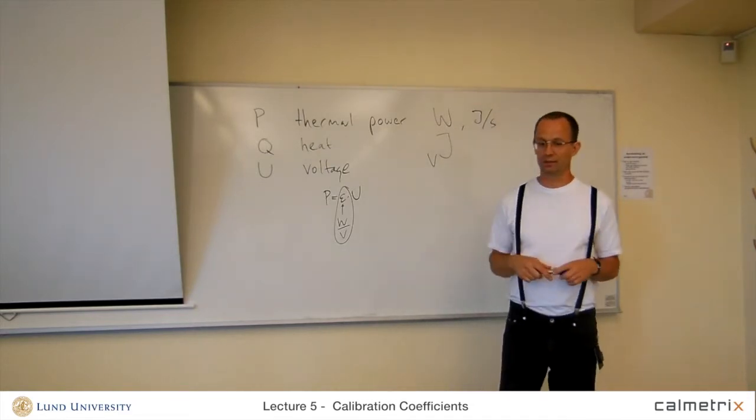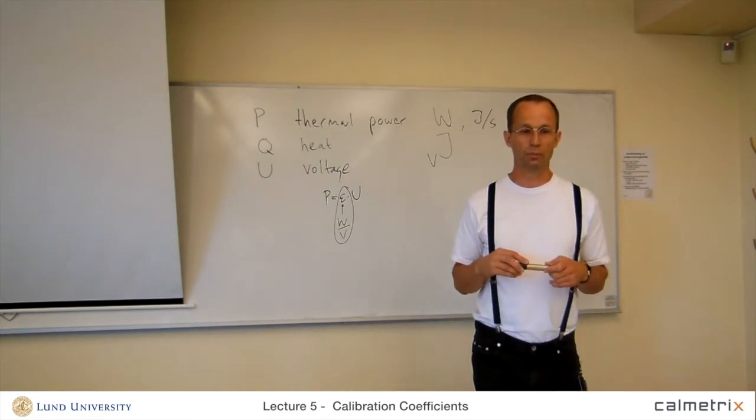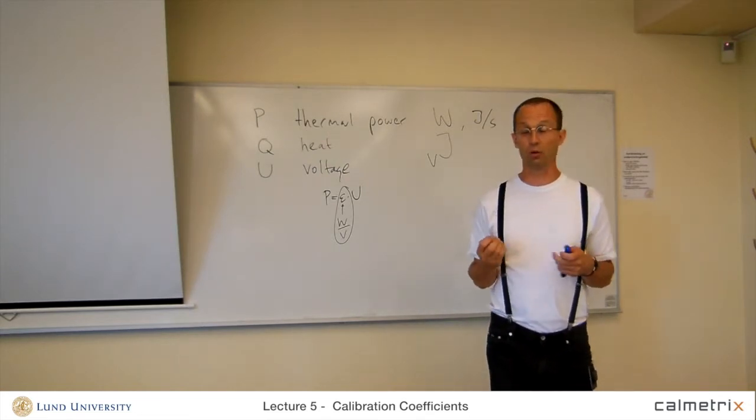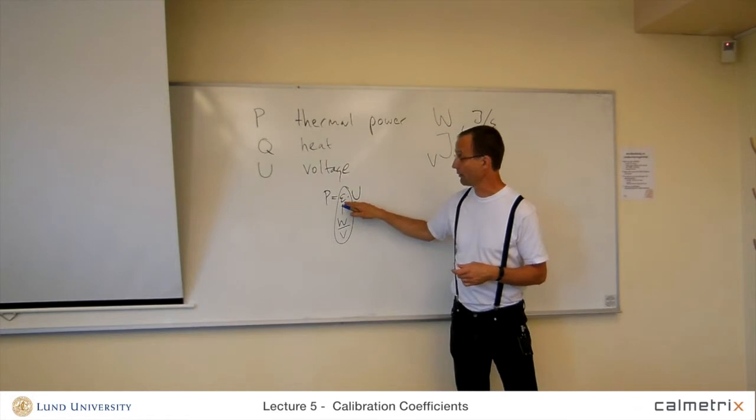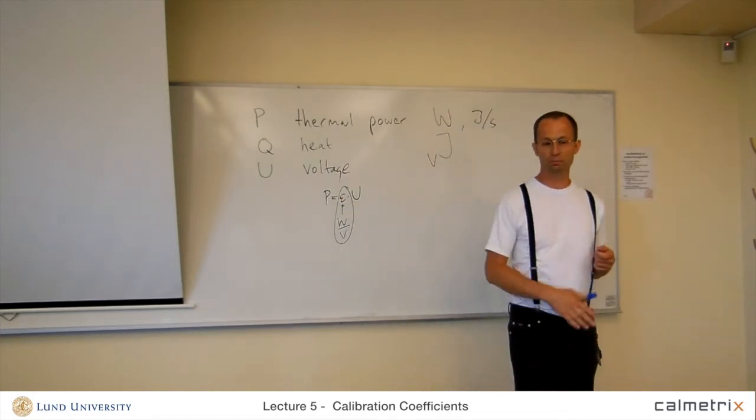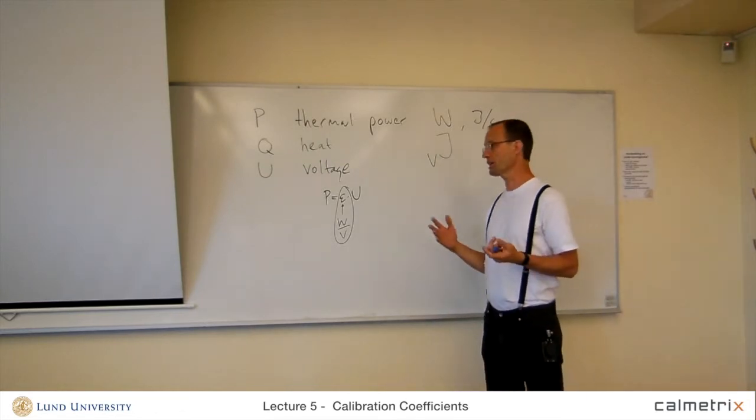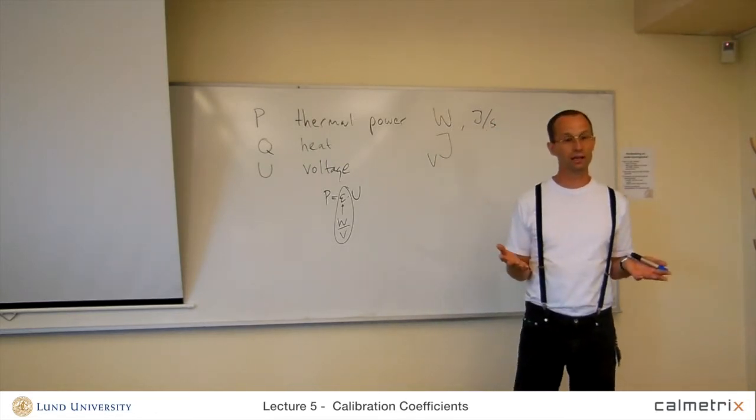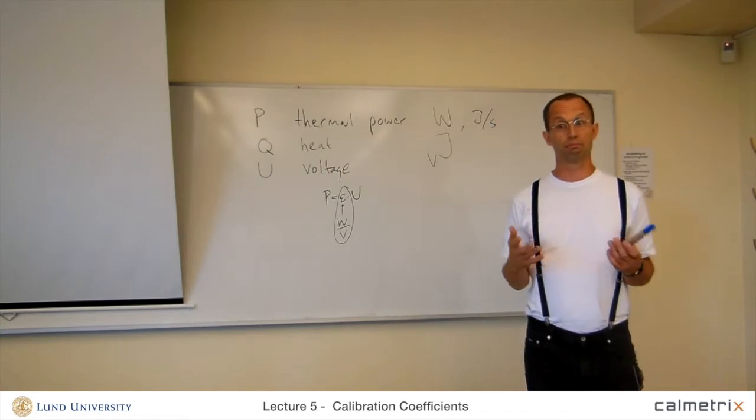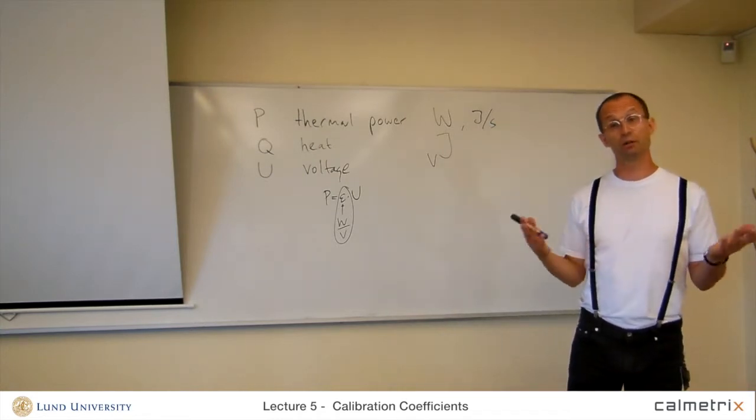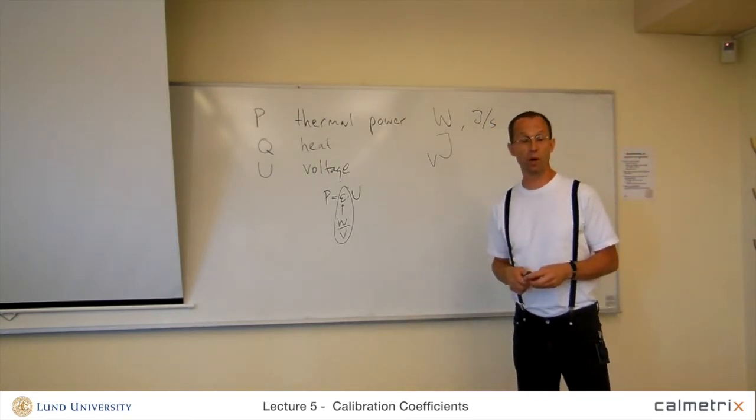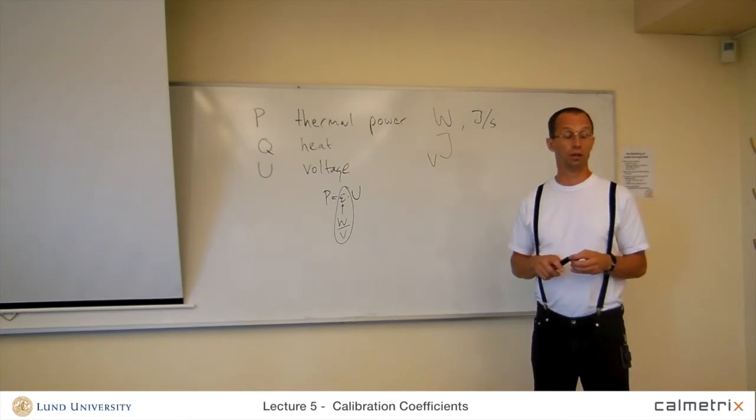And in some type of measurements, when the data is really valuable, or when you really need to have a good value of the calibration coefficient, you calibrate before each measurement. But normally you don't do that. In industrial laboratories working with cement hydration, maybe they calibrate every month, every second month, or in some cases twice a year. Depends on what they're interested in.